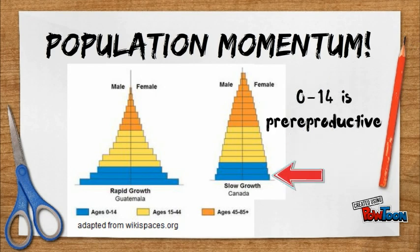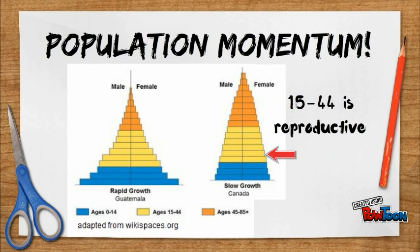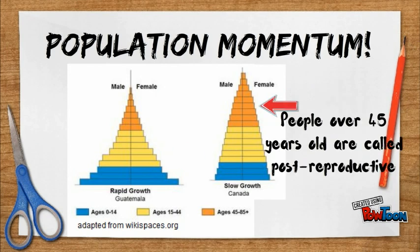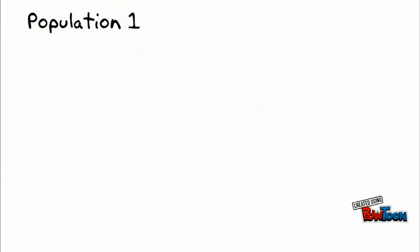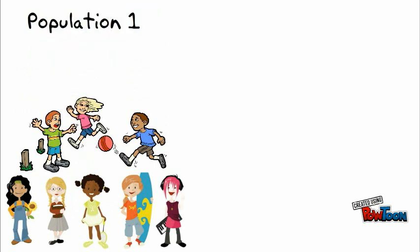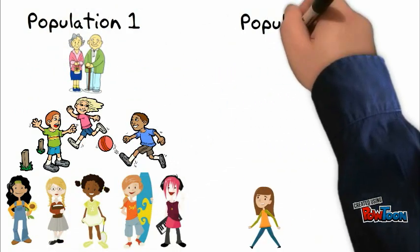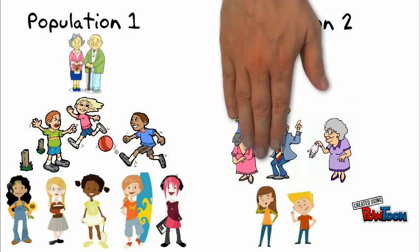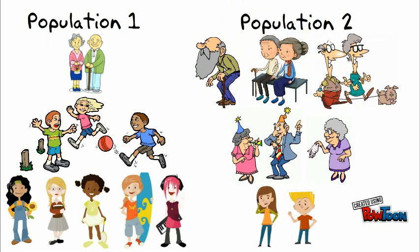Our populations will only have 10 people, but the results would apply to a larger population. Our imaginary population 1 has a young age structure — there are 8 children and 2 80-year-olds. Population 2 has an old age structure — there are 2 children and 8 80-year-olds.